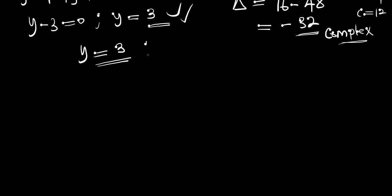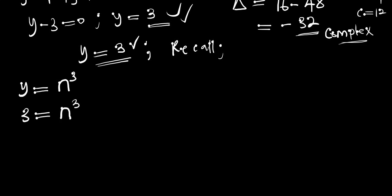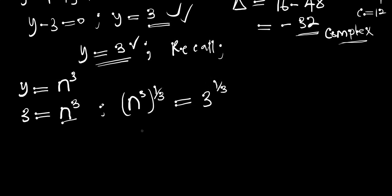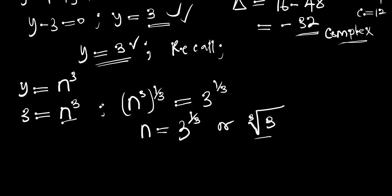Recall that y equals n to the power 3 and y equals 3, so we have n to the power 3 equals 3. Solving for n, we raise both sides to the power of one-third. The exponent one-third cancels the 3, giving n equals 3 to the power one-third, or the cube root of 3. This is the only valid real solution for n.